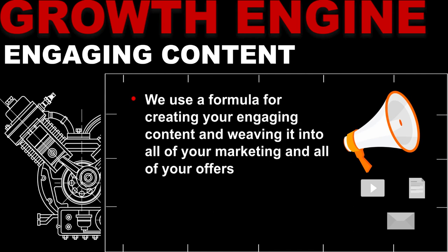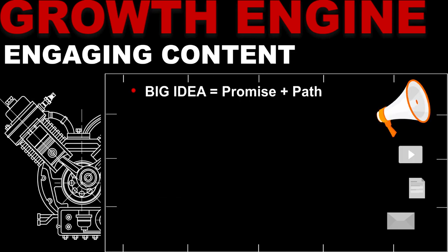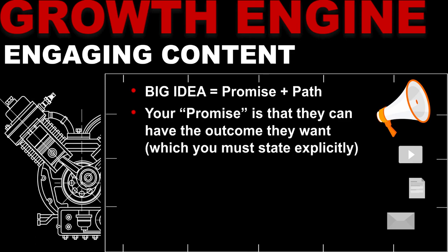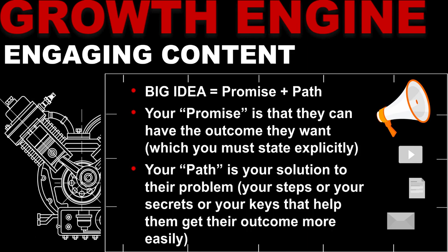We use a formula for creating engaging content that we weave into all of our marketing and offers — we call this your Big Idea. Your Big Idea is your promise and your path. Your promise is the outcome they want, which you must state explicitly. Your path is your solution to the problem — the steps, secrets, or keys that help them get their outcome more easily.